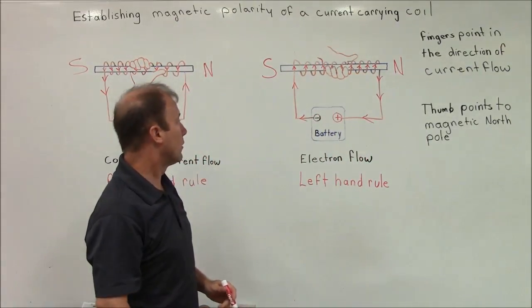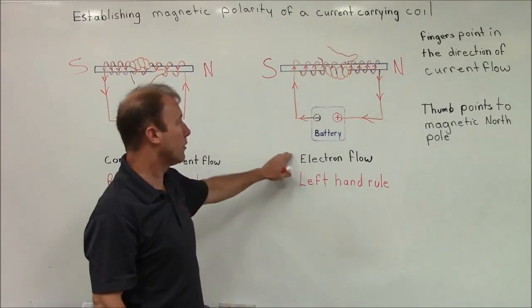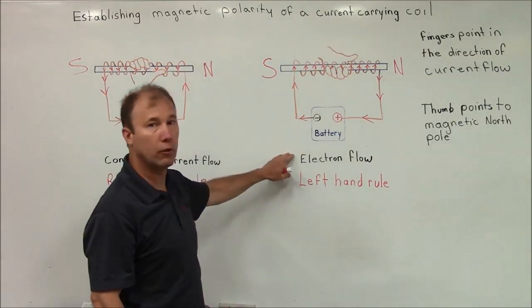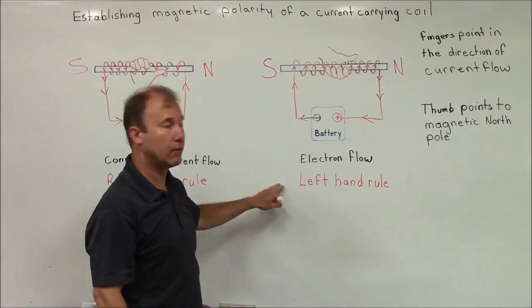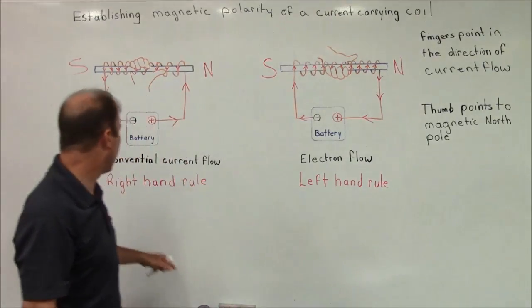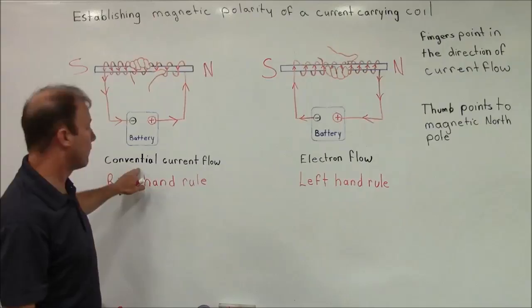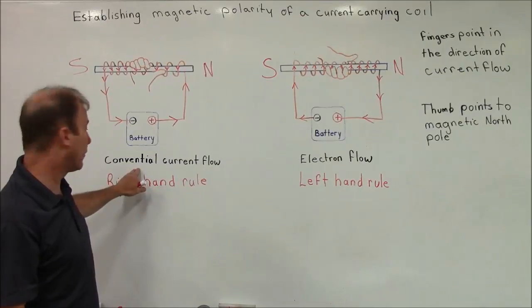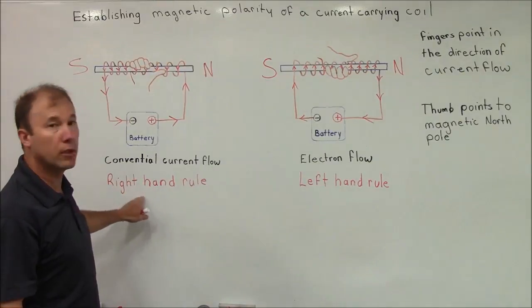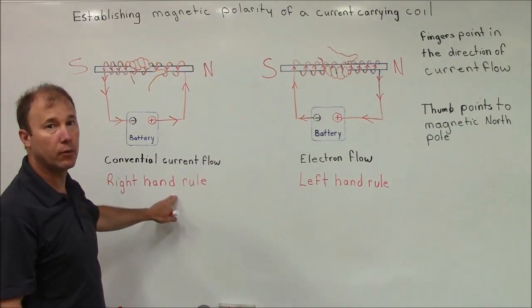The trick to remember is: if you're using electron flow, use the left hand rule. And if you're using conventional current flow, make sure to use the right hand rule.